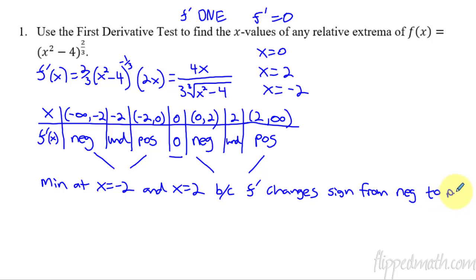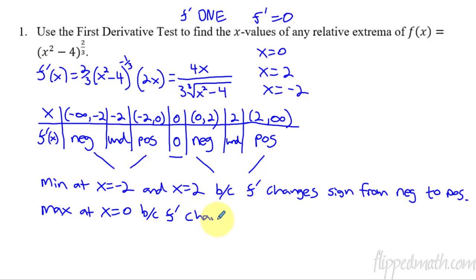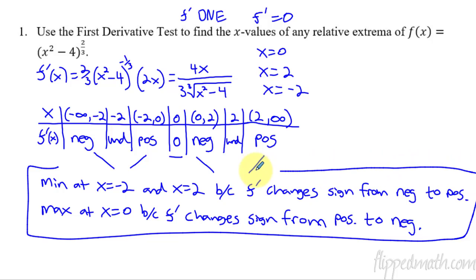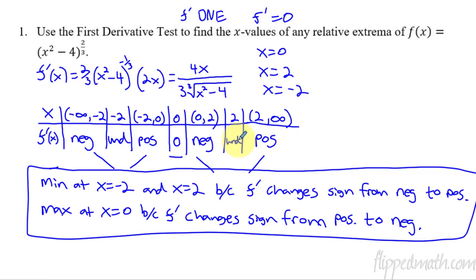That is the first derivative test. Now be careful — the chart just helps you keep track of your information. It is not the justification for why you have a max or min. The statement — f prime changes sign from negative to positive, or from positive to negative — that is your justification. The chart just helps you organize it all. One of the cool things about the first derivative test is you don't even have to know what the graph looks like, and you'll be able to tell where the min and max is just by using this calculus.